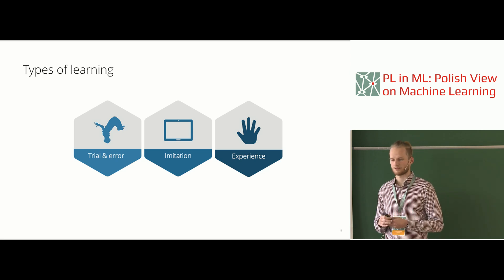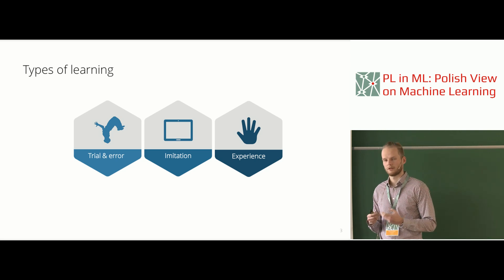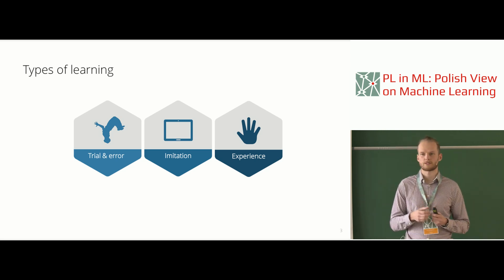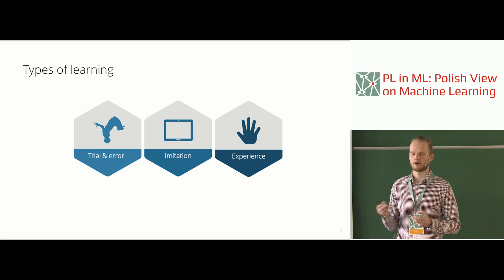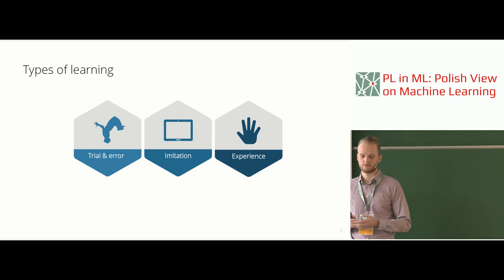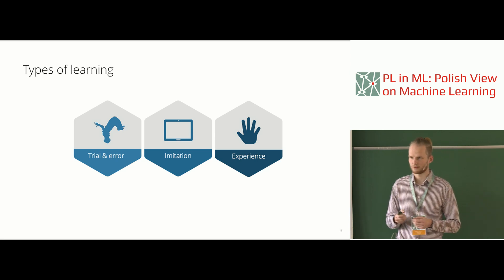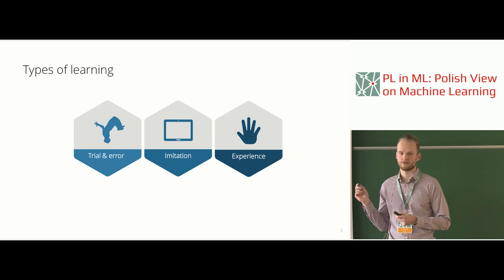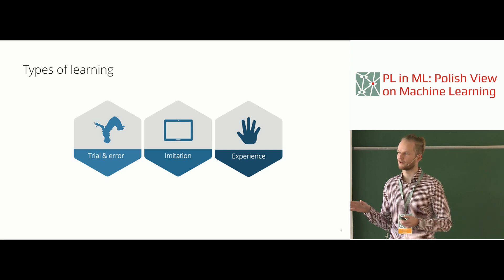In learning from prior experience, we try to answer how we can learn skills that are easily reusable and allow us to borrow from past experiences. Let's look at these three categories and compare where humans are versus the state of the art in robotics.